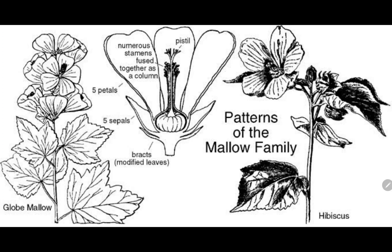Coming to the gynoecium, it is hypogynous or superior ovary. We informally call them the mallow family. Coming to the flower, it is hermaphrodite — bisexual in nature — you have both male and female in this flower. You can see the reticulate venation and it will be having a tap root. All of this comes under the family Malvaceae.